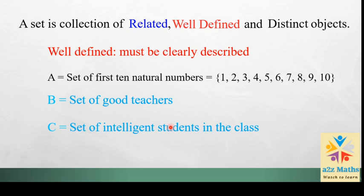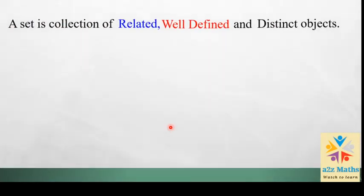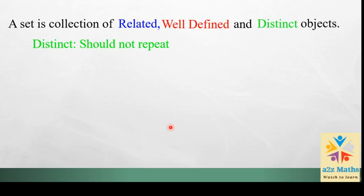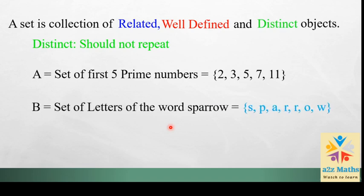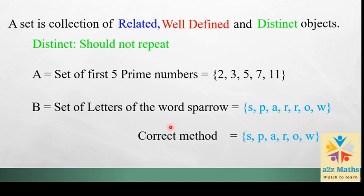The third part is distinct objects. Distinct means the elements should not repeat. For example, the set of first five prime numbers is {2, 3, 5, 7, 11} — no element is repeated. But consider the set of letters of the word 'sparrow': the letter R is repeated in 'sparrow', so we cannot write it twice. If I want to write it properly, R should be written only once. If you write it twice it will not be considered a valid set.